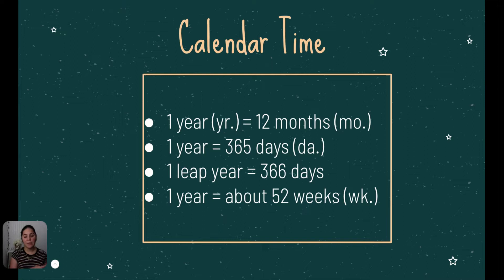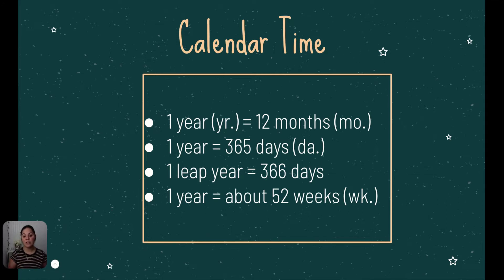We have more calendar time here. One year has 12 months. One year also has 365 days. One leap year has 366 days, and remember the month of February is where that extra day is found. One year is about 52 weeks. February either has 28 or 29 days, depending on whether it is a leap year.